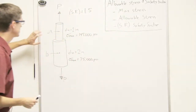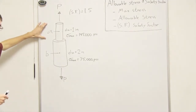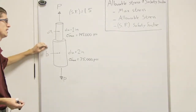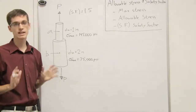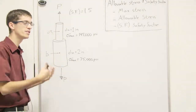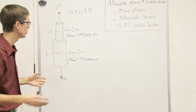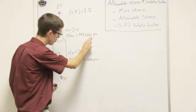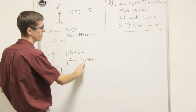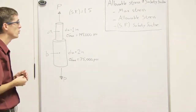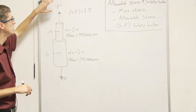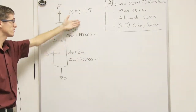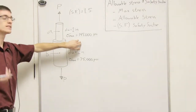We're going to look at a rod where the upper half has a smaller diameter and the lower rod has a bigger diameter — one inch diameter on top and two inch diameter on the bottom. They're made out of two different materials with different strengths and different maximum stresses. The top rod has a maximum stress of 145,000 psi while the bottom has a maximum stress of 75,000 psi. We want to find the maximum force we can apply before passing the allowable stress.